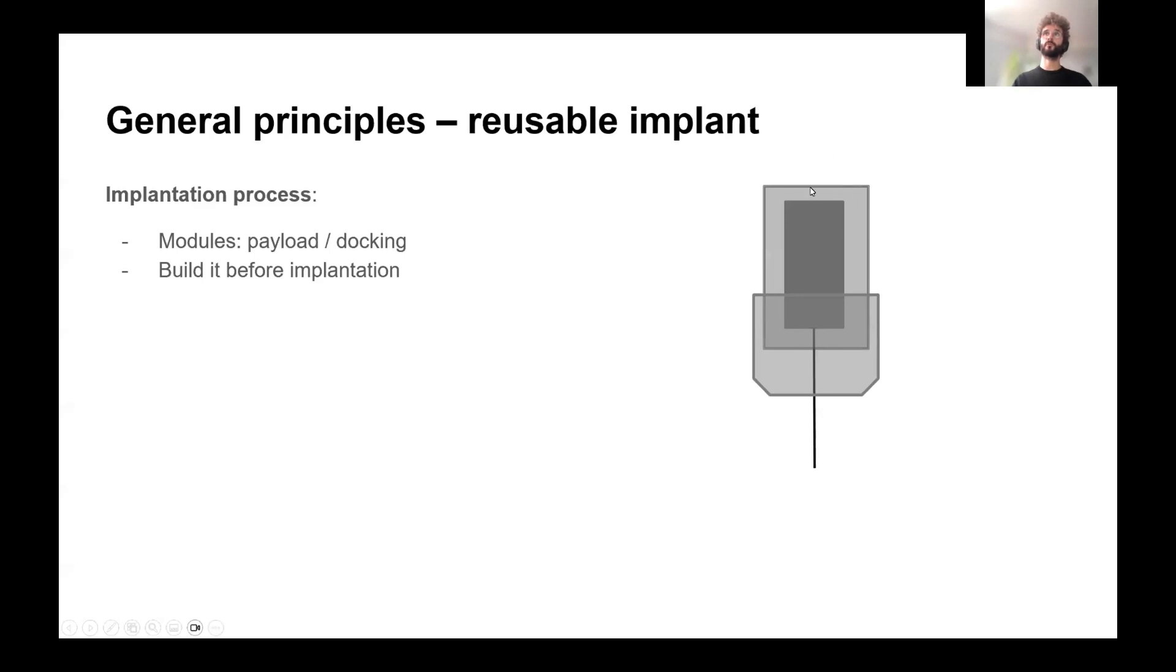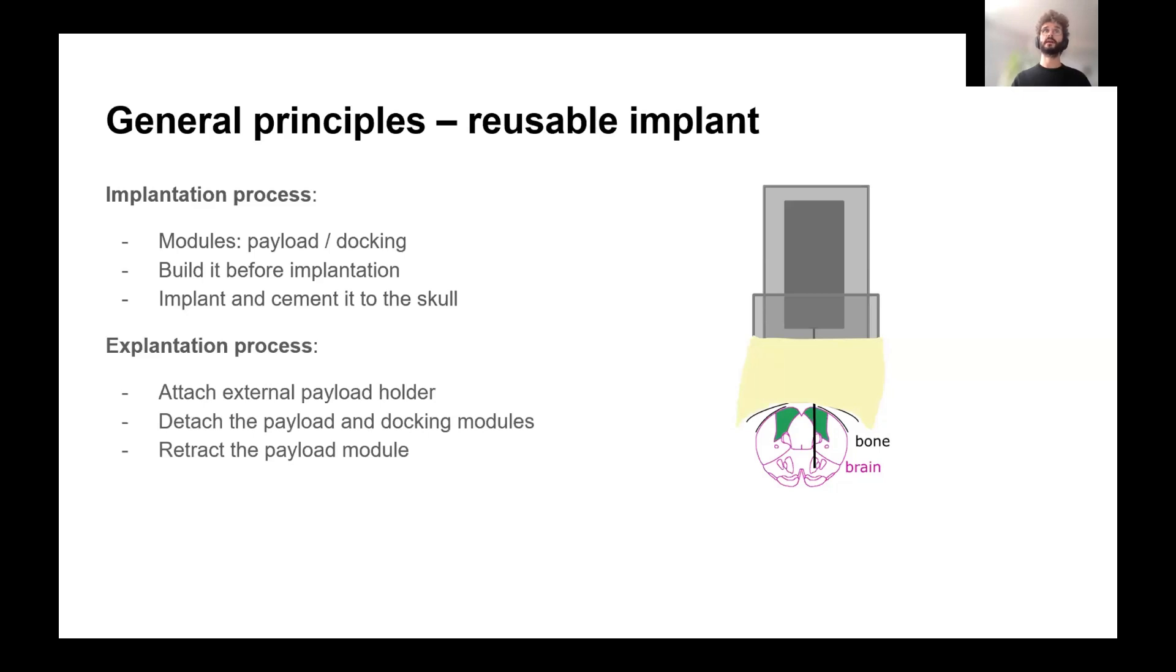And the idea is you're going to assemble these two pieces together. And in the end, you'll be able to recover the permanent one, so the payload module with the probe, while this one, the docking module, is going to stay on the skull to which it's attached. And you're going to lose it at the end. But it's not too bad because these pieces are usually cheap. So if you insert it in the brain, you cement only the docking module. And then when you want to retrieve it, you actually detach these two pieces from one another. And then you take it out and you can reuse it. So this is a very simple approach.